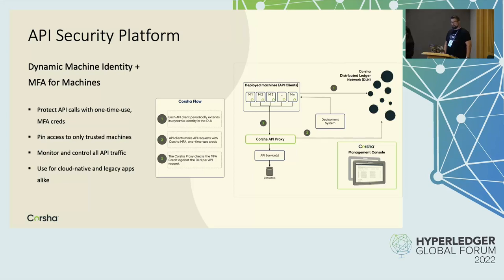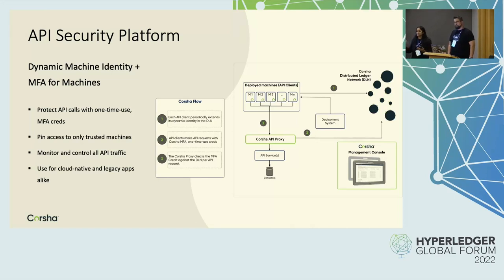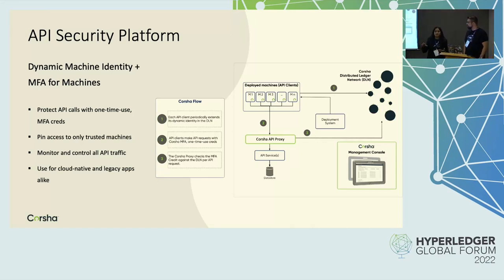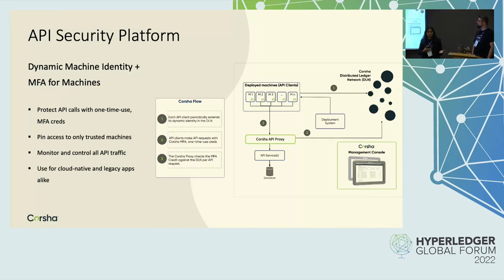Here we're using Hyperledger Fabric for that out-of-band element. The ledger is allowing us to do the automation and maintain these identities going forward, and even do things like provide the ability to monitor, halt, and resume API access. We'll show this during the demo.